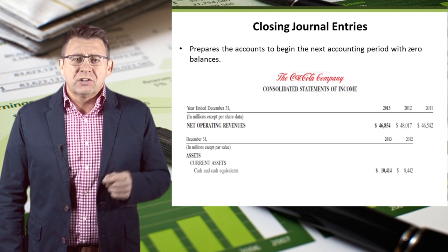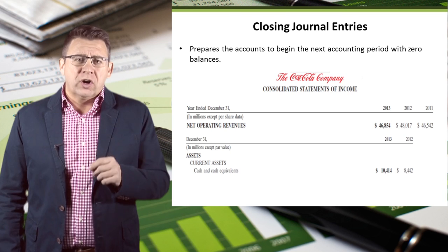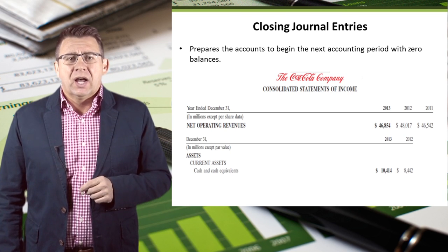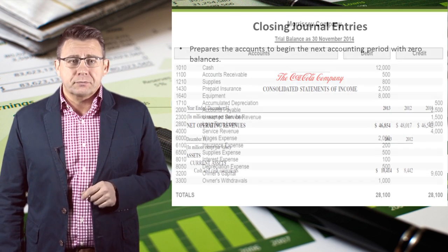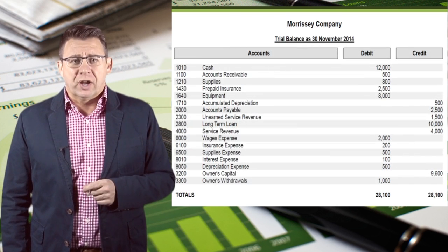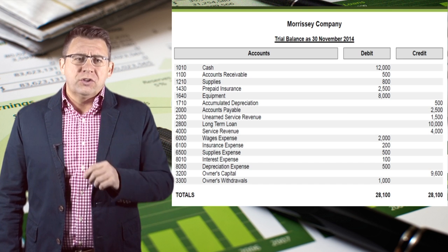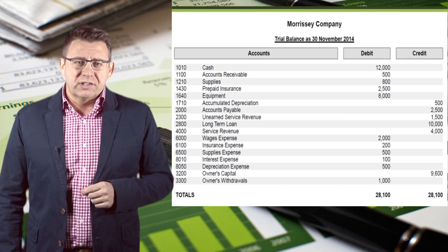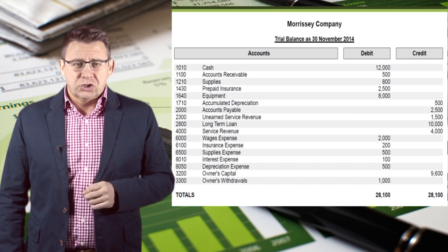So let's look at the adjusted trial balance and learn how to make closing journal entries. Here is an example of an adjusted trial balance. We could have also used the financial statements to make the closing journal entries.